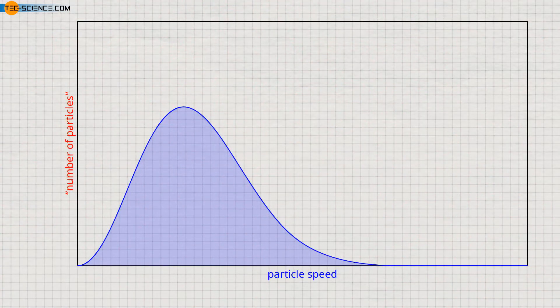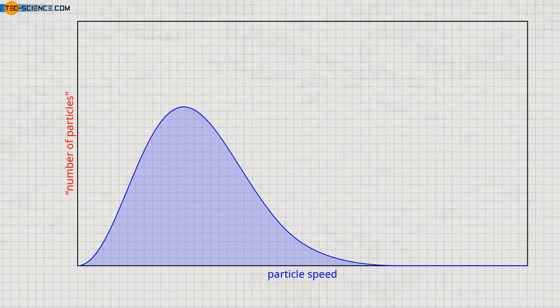For ideal gases, the physicists James Clerk Maxwell and Ludwig Boltzmann were able to derive such a speed distribution with the help of statistical methods. Whether such a theoretically derived distribution actually applies in practice, however, must be verified in an experiment. Therefore, the question arises how the speeds of the gas molecules can be determined experimentally in order to then make a statement about the speed distribution. In the following, an experiment will be demonstrated in more detail and its result will be discussed.